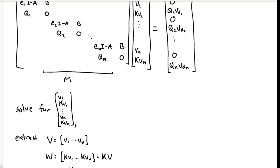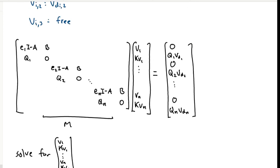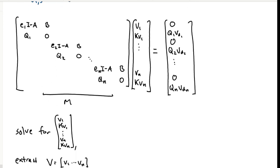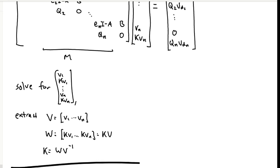Now all you need to do to solve for the final thing is invert the M matrix, solve for this vector of eigenvectors and K times eigenvectors, separate them out as we did before, and solve for the gain matrix K.